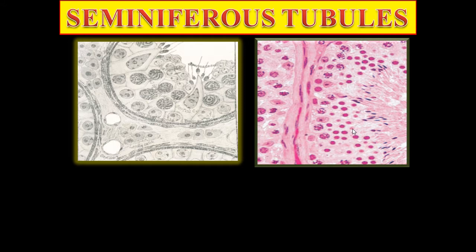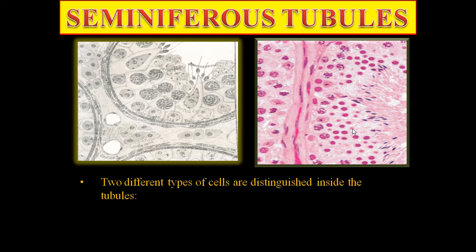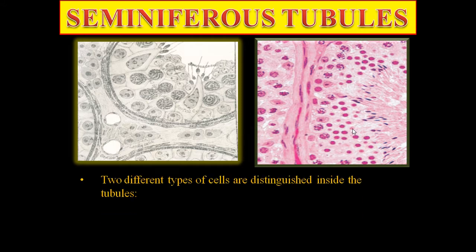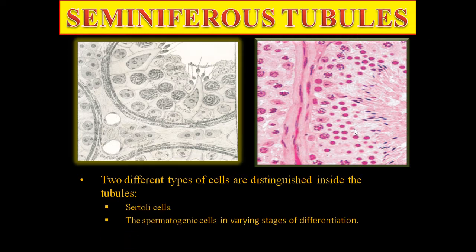Interstitial cells of Leydig are responsible for testosterone secretion. Within the seminiferous tubules there are two different types of cells: Sertoli cells and spermatogenic cells in varying stages of differentiation.